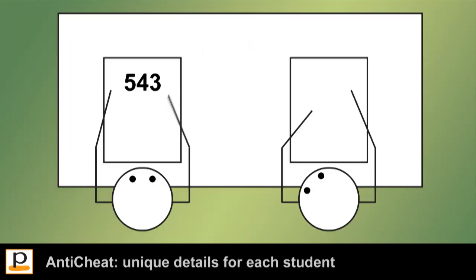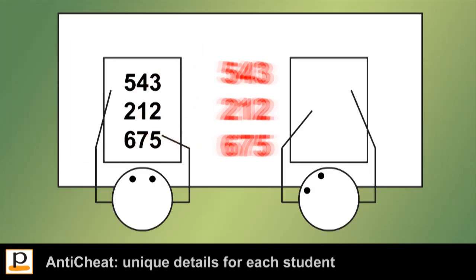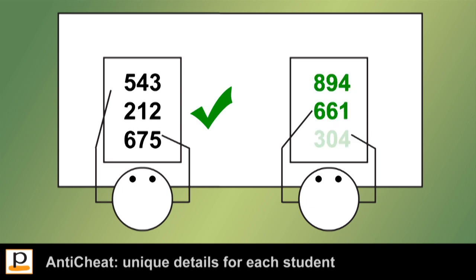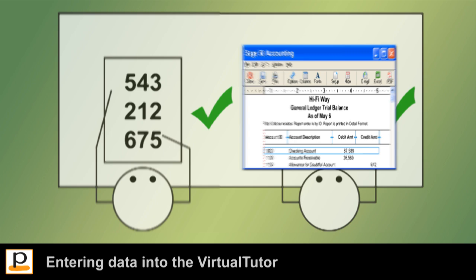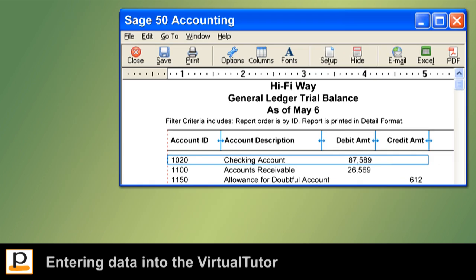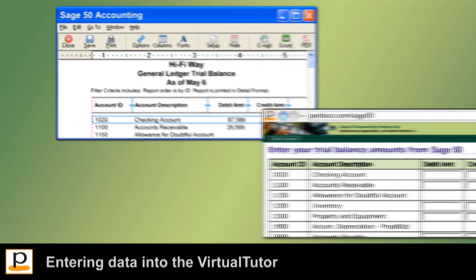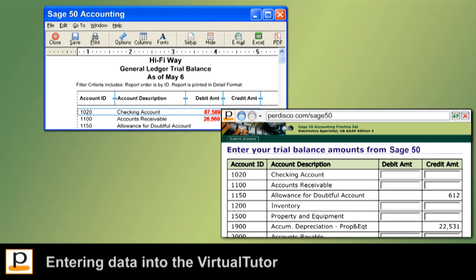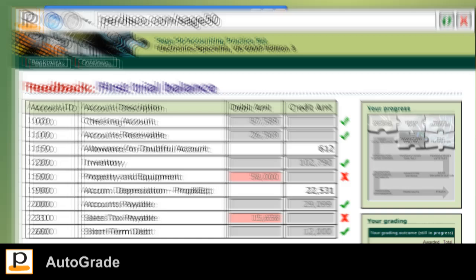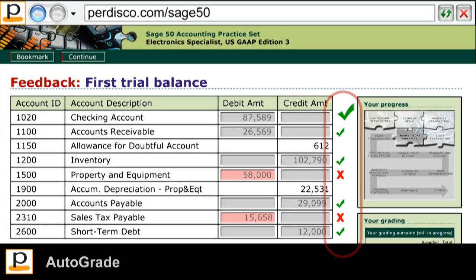Since students are unable to copy each other's work, they're forced to thoroughly practice and understand the skills essential to accounting in Sage50. Once students have recorded the given transactions, they generate a trial balance and enter the amounts provided by Sage50 into the virtual tutor. When they submit their answers, each student's work is automatically graded based on the unique transaction list they were given.